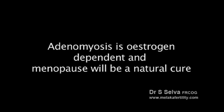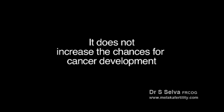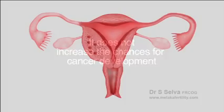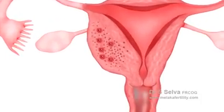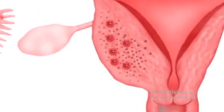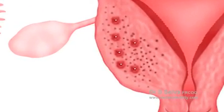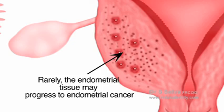Adenomyosis is estrogen dependent and menopause will be a natural cure. It does not increase the chances for cancer development. However, since the endometrial lining has invaded the myometrium, rarely this endometrial tissue may progress to endometrial cancer.